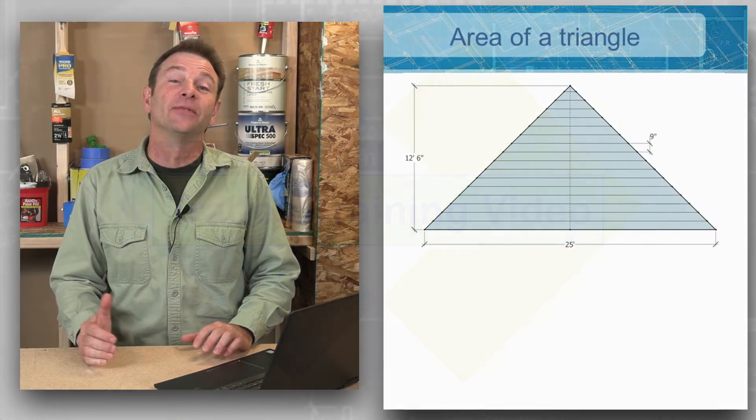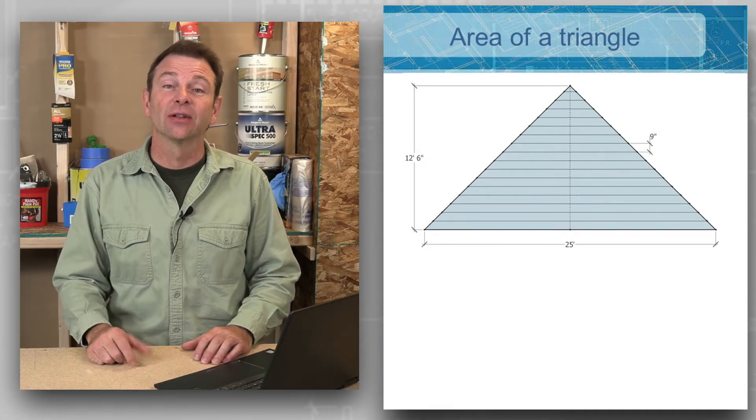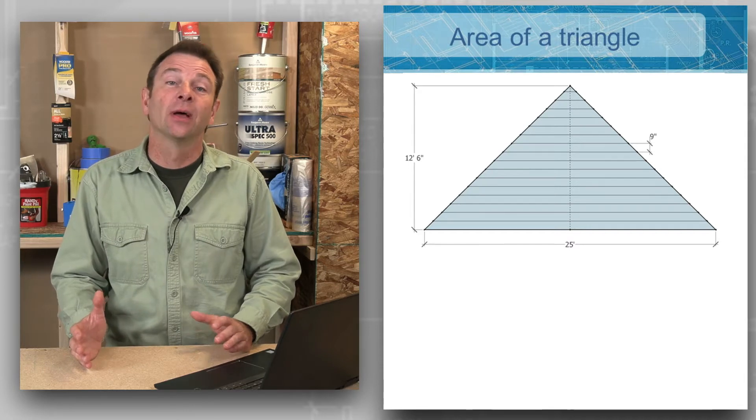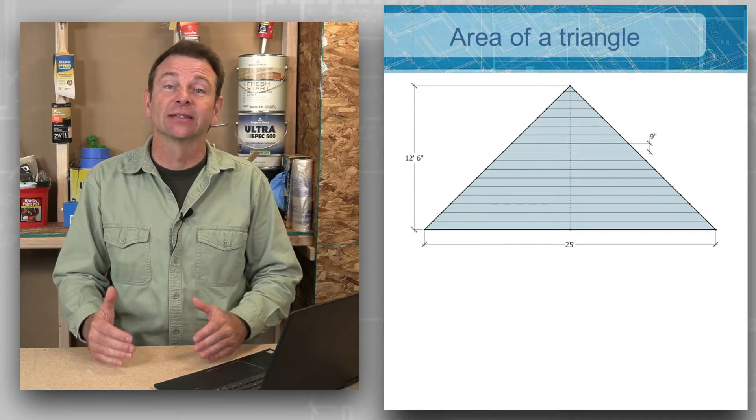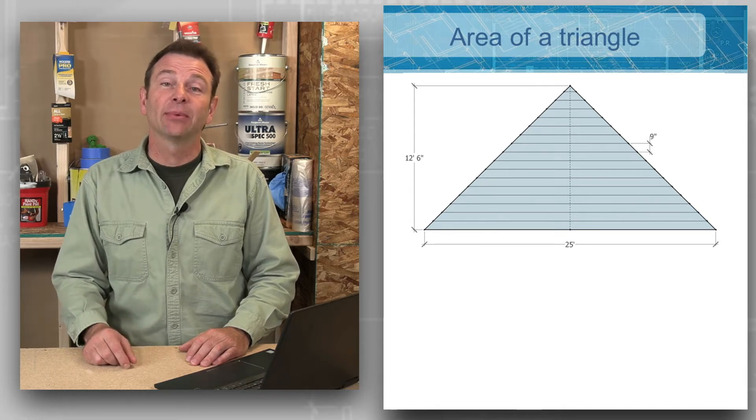We can figure the area of different shapes other than rectangles. Here we have a triangle, and in construction we're often building and creating areas like triangles. In this case we're looking at a gable. A gable is a simple pitch of a roof.